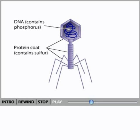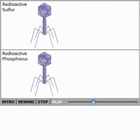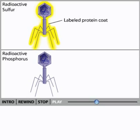Hershey and Chase grew the viruses on bacterial cells in a medium containing either radioactive sulfur or radioactive phosphorus. In one experiment, the resulting viruses contained radioactively labeled protein coats. In the other, the viruses contained radioactively labeled DNA.